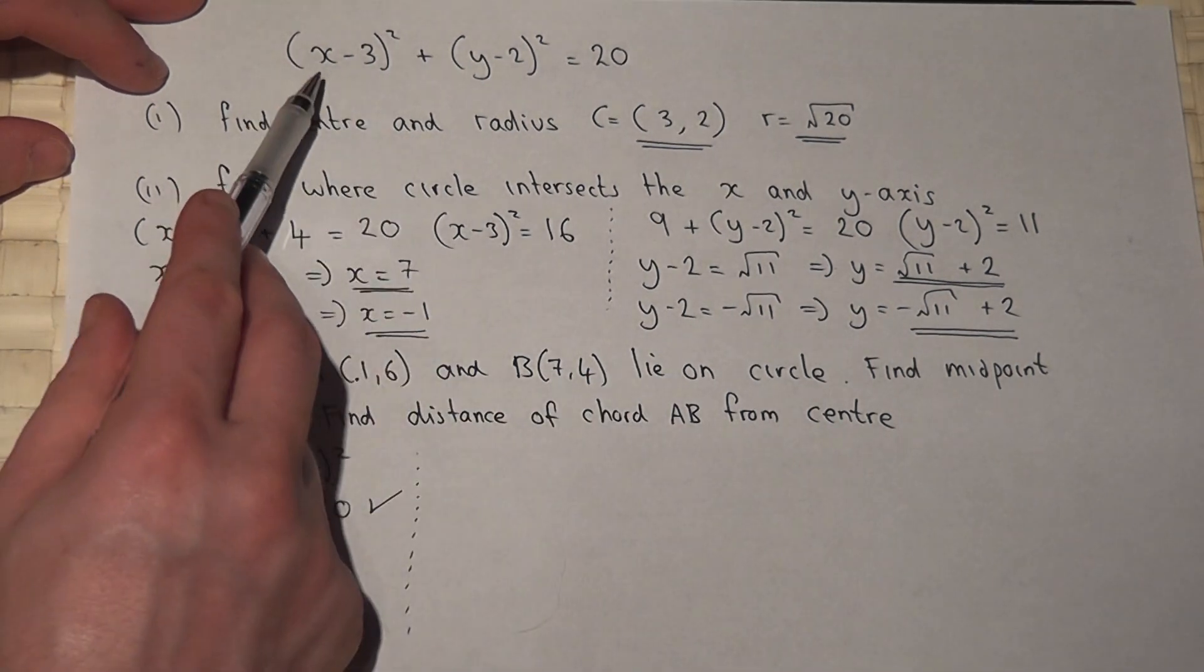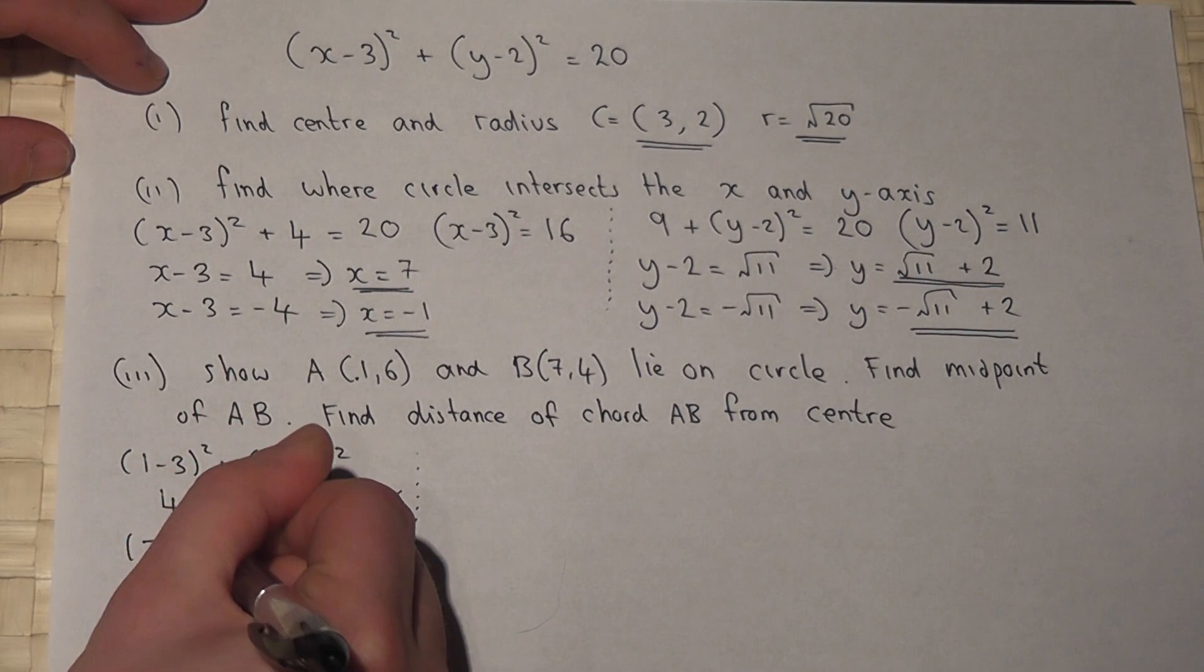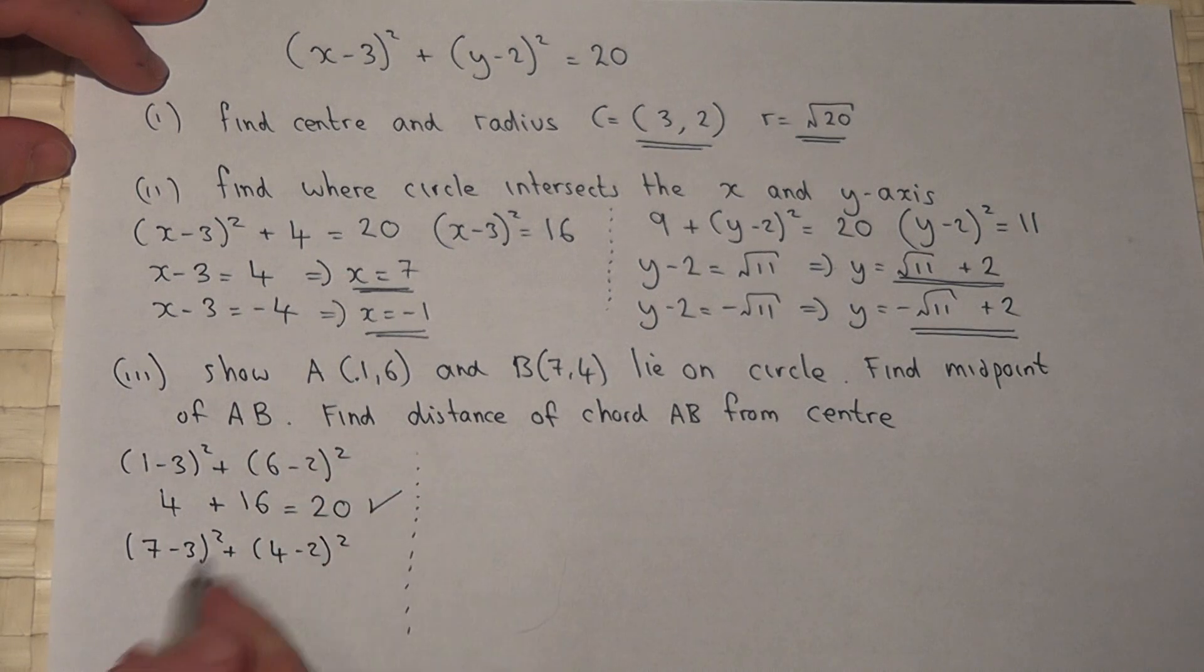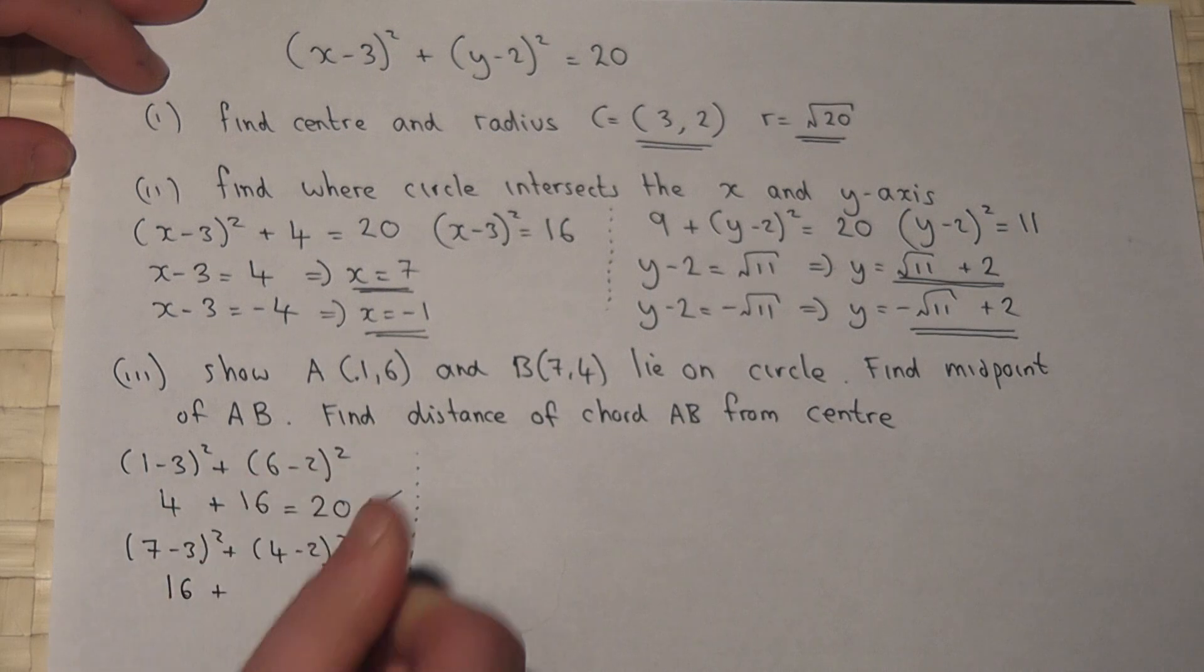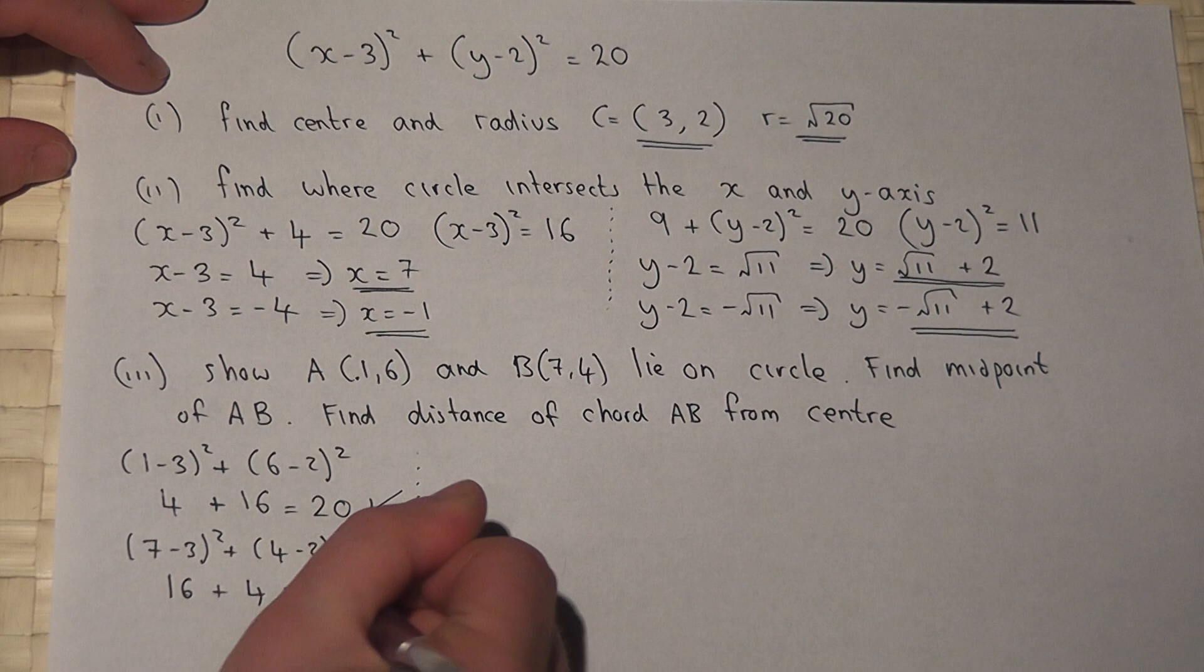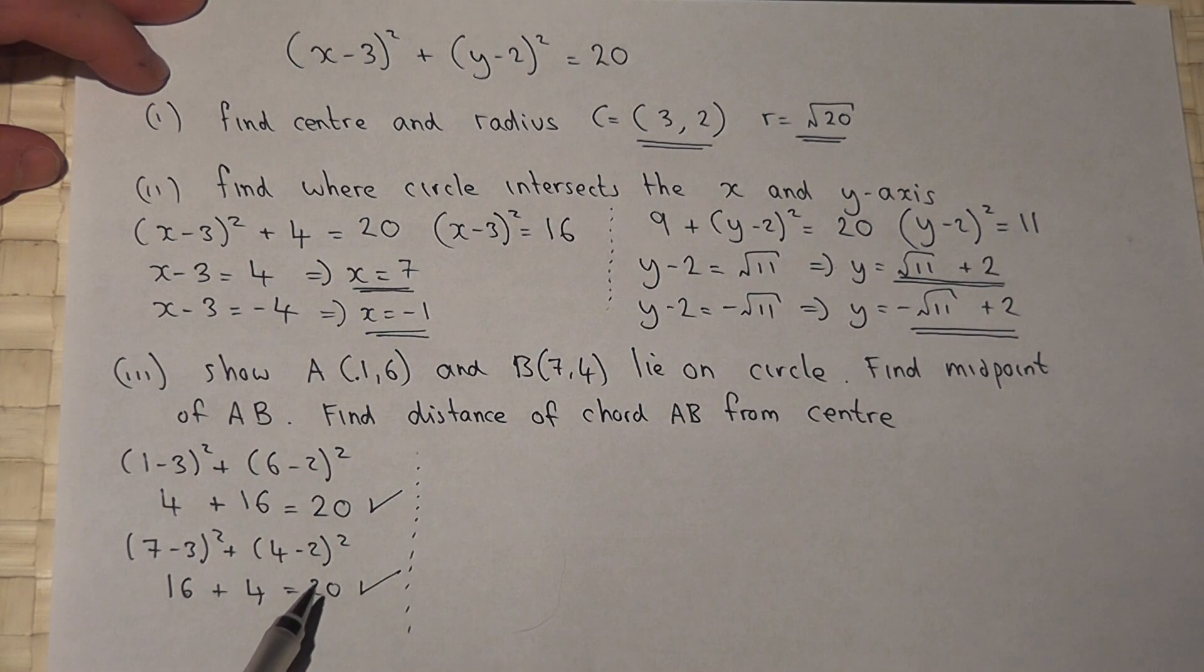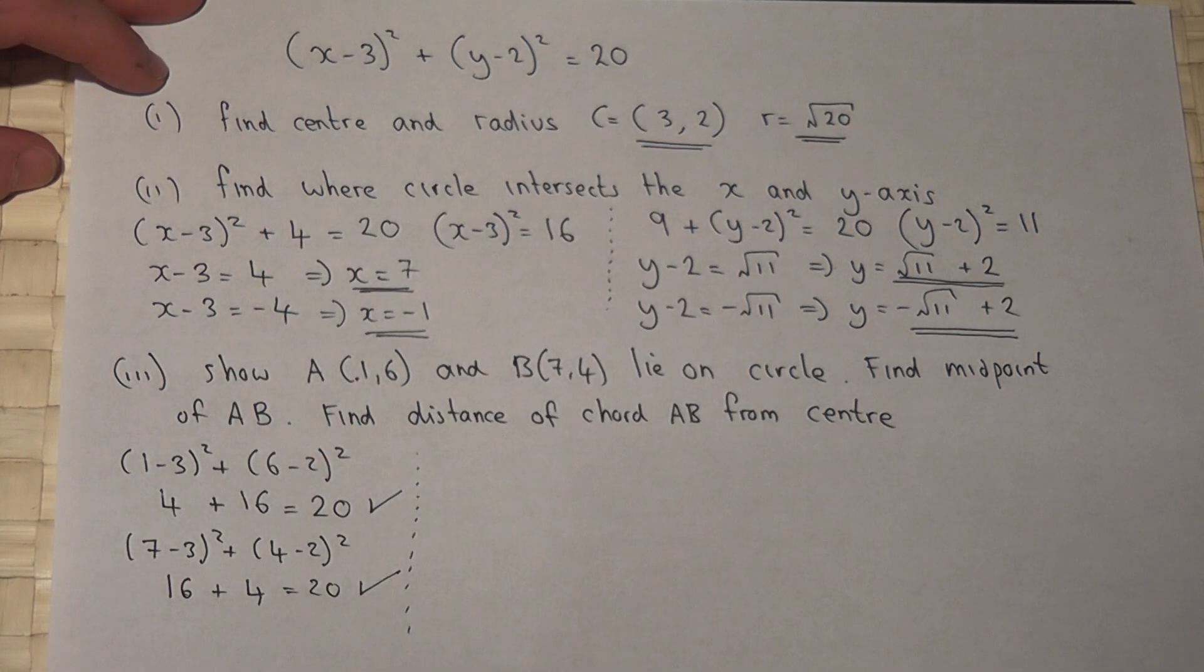I'll then check for point B. So x is now 7, y is now 4. So (7-3)² + (4-2)². 7-3 is 4, 4 squared is 16. 4-2 is 2, 2 squared is 4. That equals 20. So again, both coordinates, if they're substituted into the equation, equal 20. Therefore, these points must lie on the circle.